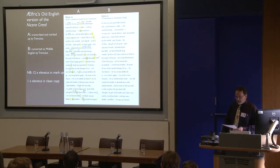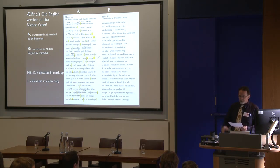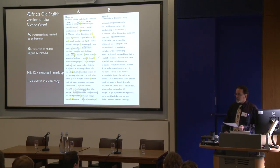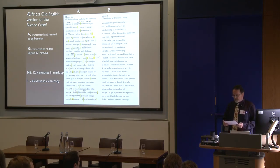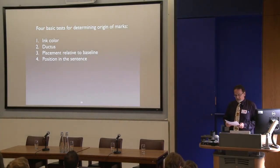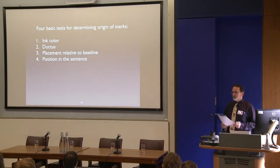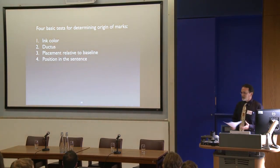These are all my concern initially with any one of these manuscripts. Are other marks than the punctus employed? How? Does the scribe make clear distinctions between clauses and, if so, with which graphs? Next comes the actual determination of which marks on the page are interventions, and there are four basic tests: ink color, ductus — yes, punctuation does kind of sort of have a ductus — placement relative to baseline, and position in the sentence.